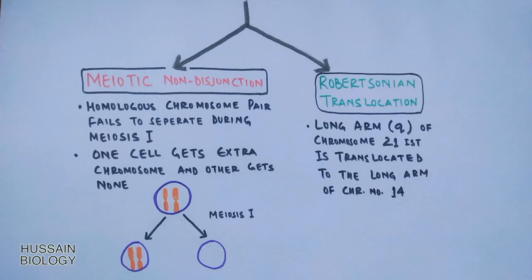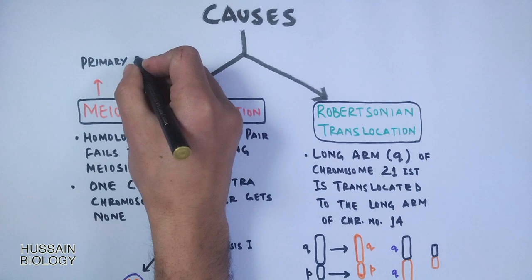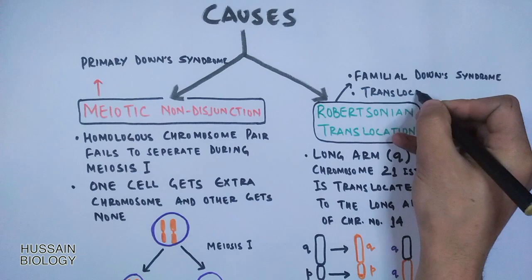Meiotic non-disjunction causes primary Down syndrome, while Robertsonian translocation causes familial Down syndrome. Individuals with the translocation are called translocation carriers because Robertsonian translocation does not cause a direct effect of Down syndrome.